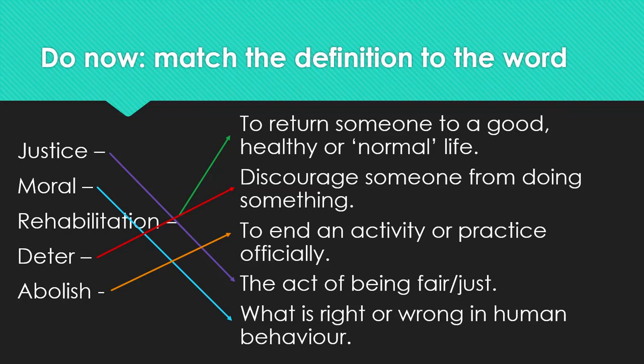It's important that we know the meanings of these words because this is the vocabulary I would like you to have in your vernacular. I would like you to not just know what they mean, but to be using them. Words like justice, moral, rehabilitation, deter and abolish are key to discussing the legal system — and in this case, the death penalty. These words are key for you to be able to talk about that particular issue with any degree of articulacy.